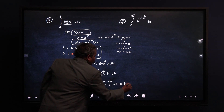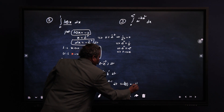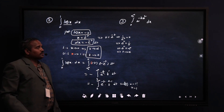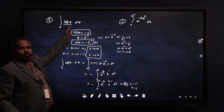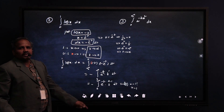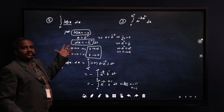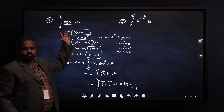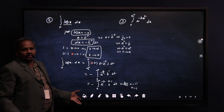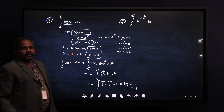Gamma(2) = 1 factorial = 1, so the answer is -1. Therefore integral from 0 to 1 of log(x) dx = -1. For any integral containing a logarithm, you evaluate it in this way using the gamma function.